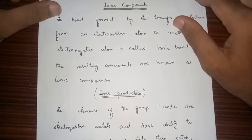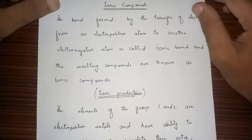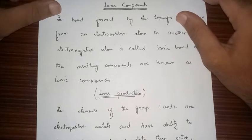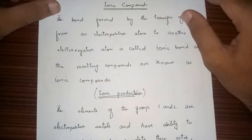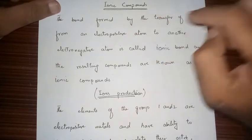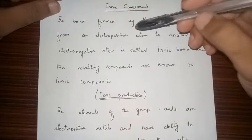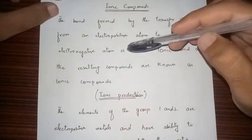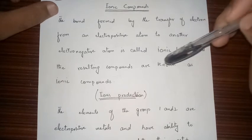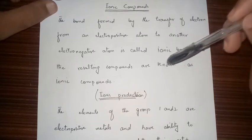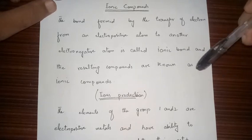Good morning everyone, welcome to the chemistry channel. Today we will discuss ionic compounds, their formation, ionic bonds, and electron transfer between atoms in ionic compounds. The bond formed by the transfer of electrons from an electropositive atom to an electronegative atom is called an ionic bond, and the resulting compounds are known as ionic compounds, which are made up of positive and negative ions.